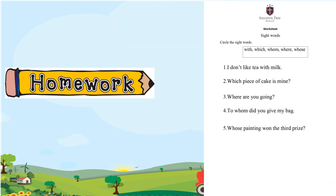Now, children, this is your homework. What you have to do is you have to read this sentence and then write in your notebook and circle the sight words. Okay? Complete the work and upload on the ERP.